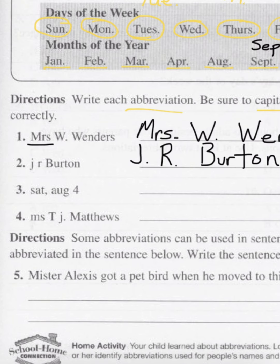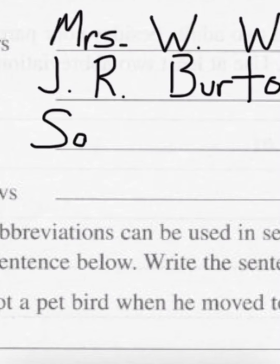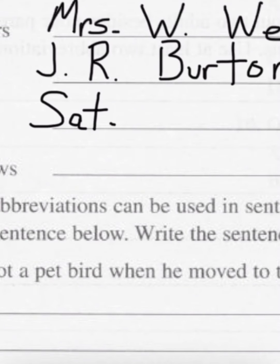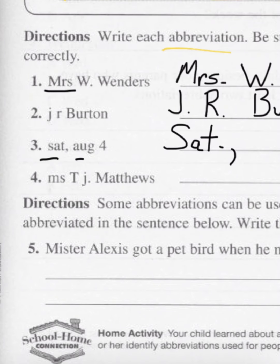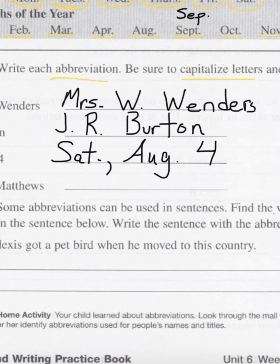Number three: Saturday, August 4th — I see four errors. Saturday needs to be capitalized: capital S-A-T, that's the first mistake. There's no period after the abbreviation — so we need the period, that's the second mistake. Then a comma, because we always have a comma between the day and the month. August should have been capitalized — that's the third mistake. And there was no period after the G — that's the fourth mistake. So: capital S-A-T period, comma, capital A-U-G period, number four.